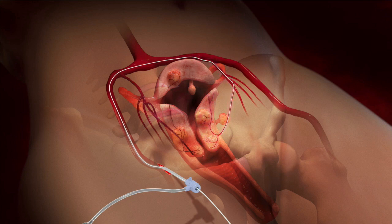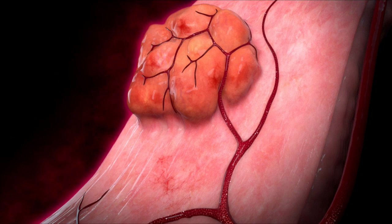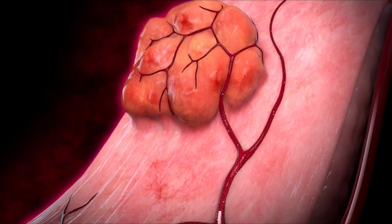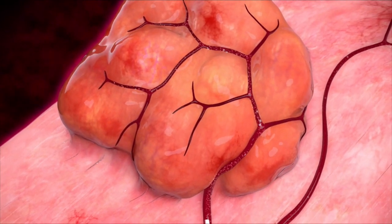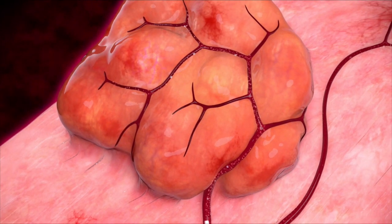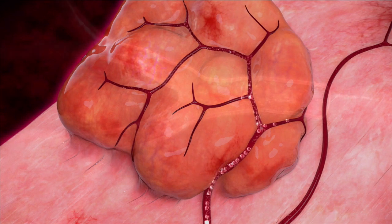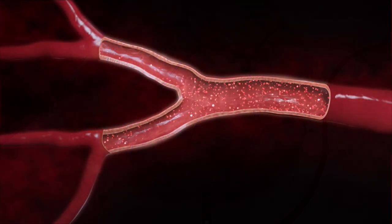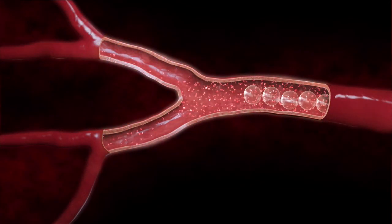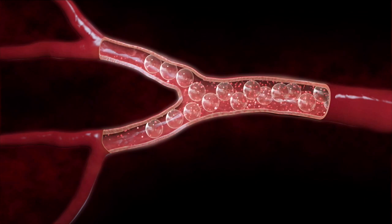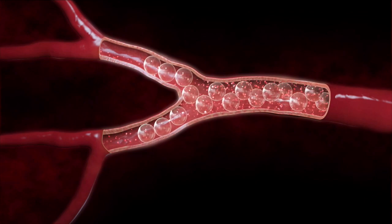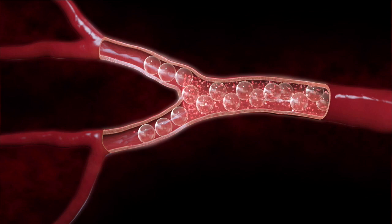By using x-ray pictures during the procedure, we can steer that catheter directly into the arteries that feed the fibroid. From that location, we can take additional pictures to ensure we're in the correct artery and then deposit small particles or medical beads that are lodged inside the artery. These small medical particles plug the arteries and prevent blood flow into the fibroids.